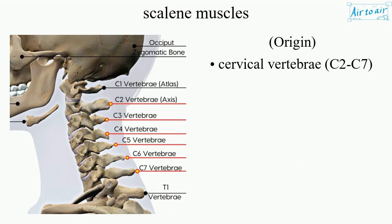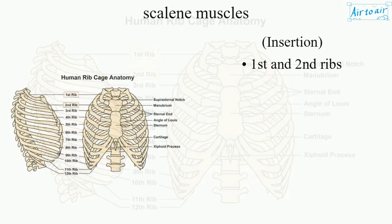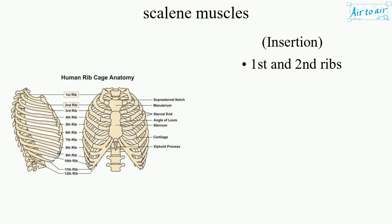Origin: cervical vertebrae, C2–C7. Insertion: first and second ribs.